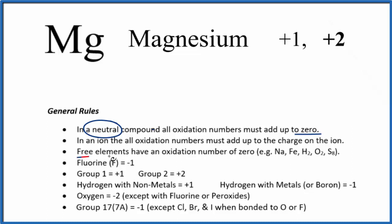We say that magnesium just by itself is called a free element. Free elements have an oxidation number of zero, like sodium, iron, or even H2, O2, or S8. Because they're all the same element, they're considered free elements, and the oxidation number will be zero.